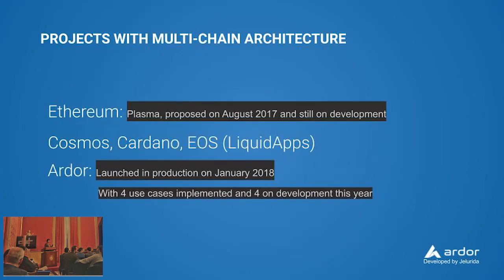Currently, there are several projects that are moving towards this kind of architecture. Ethereum proposed in August 2017 a project called Plasma that is not developed yet, and other projects like Cosmos, Cardano or EOS have also variants of this architecture.